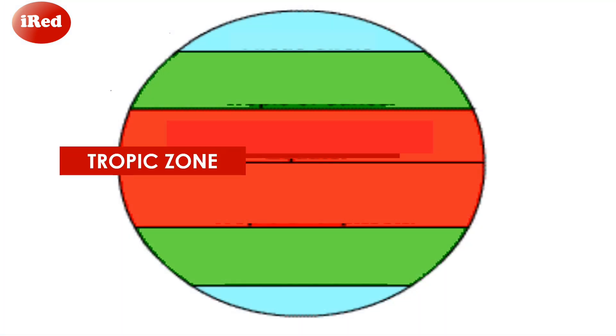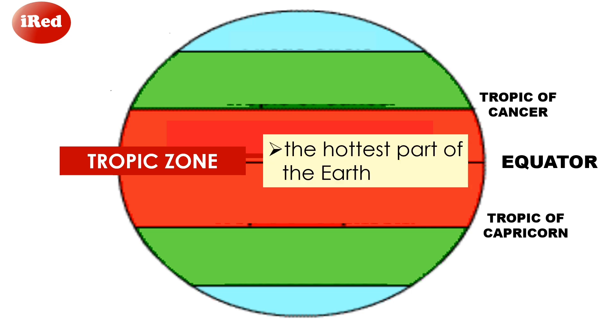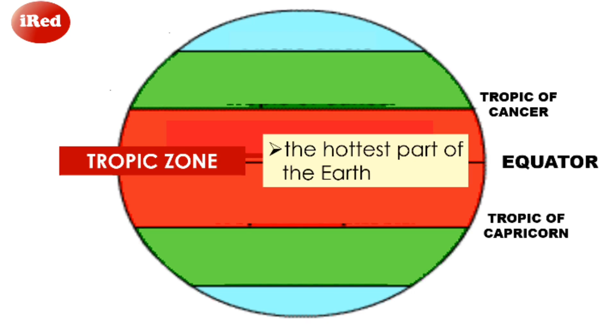The Tropic or Torrid Zone is located along the equator between the Tropic of Cancer and Capricorn. Tropic Zone is the hottest part of the Earth. Places in the zone, like the Philippines, typically have a tropical climate, which means it is warm all year long.